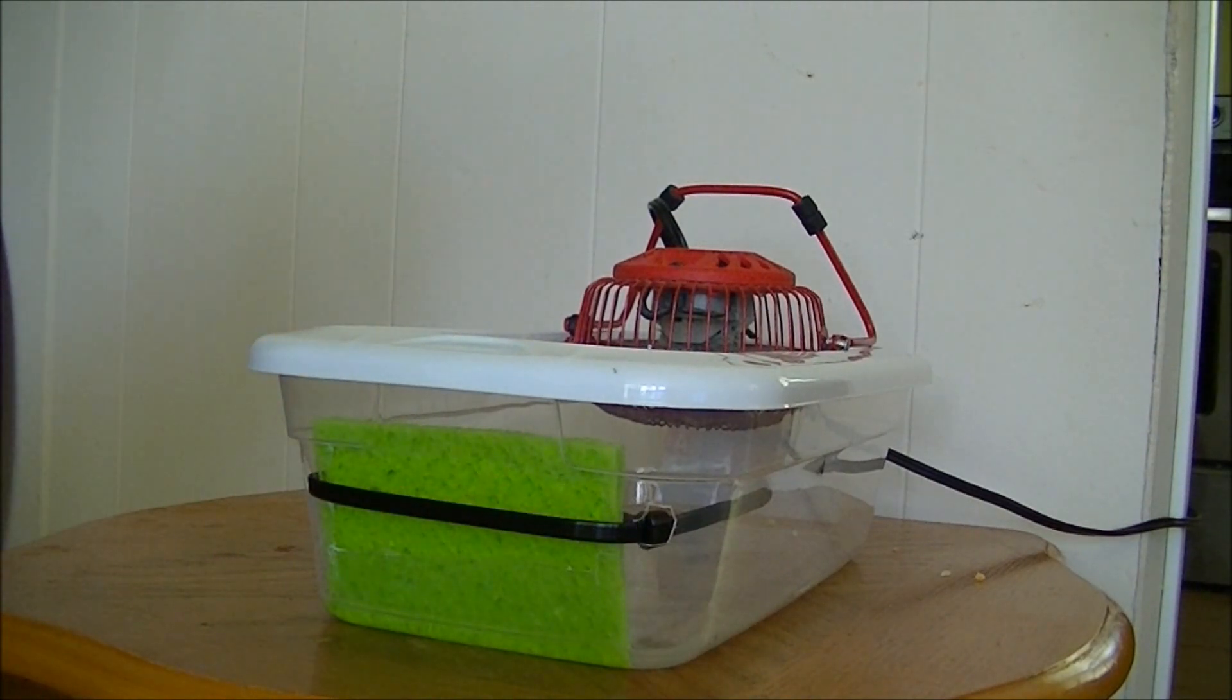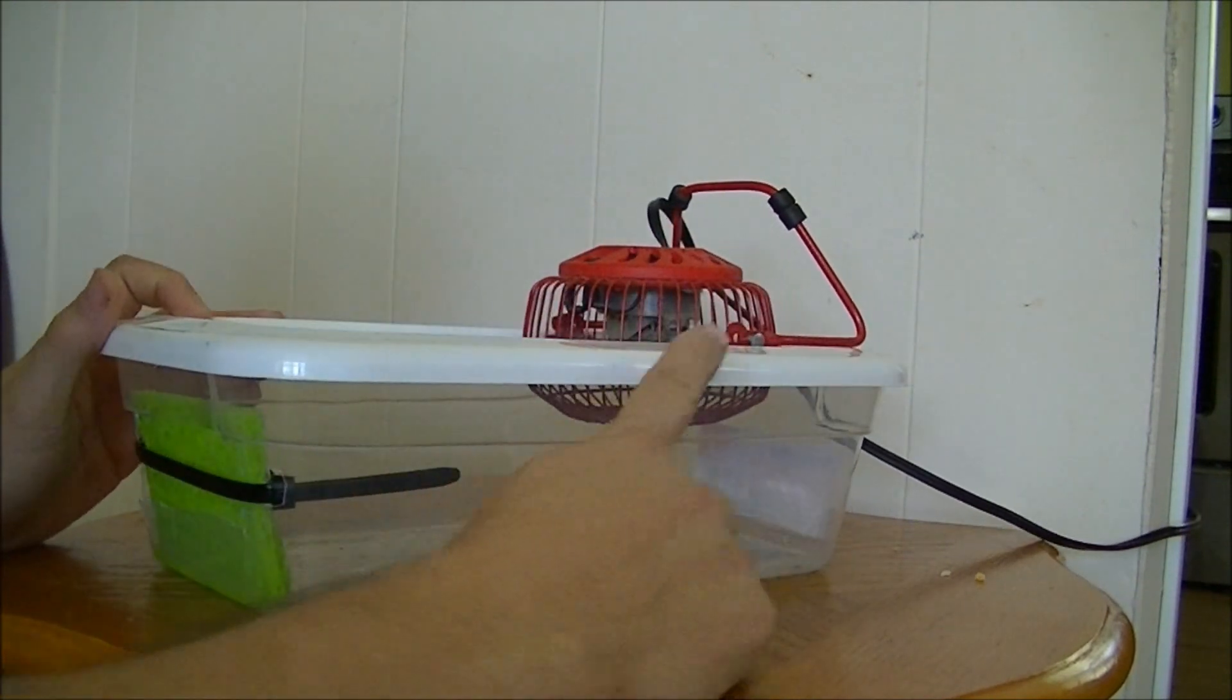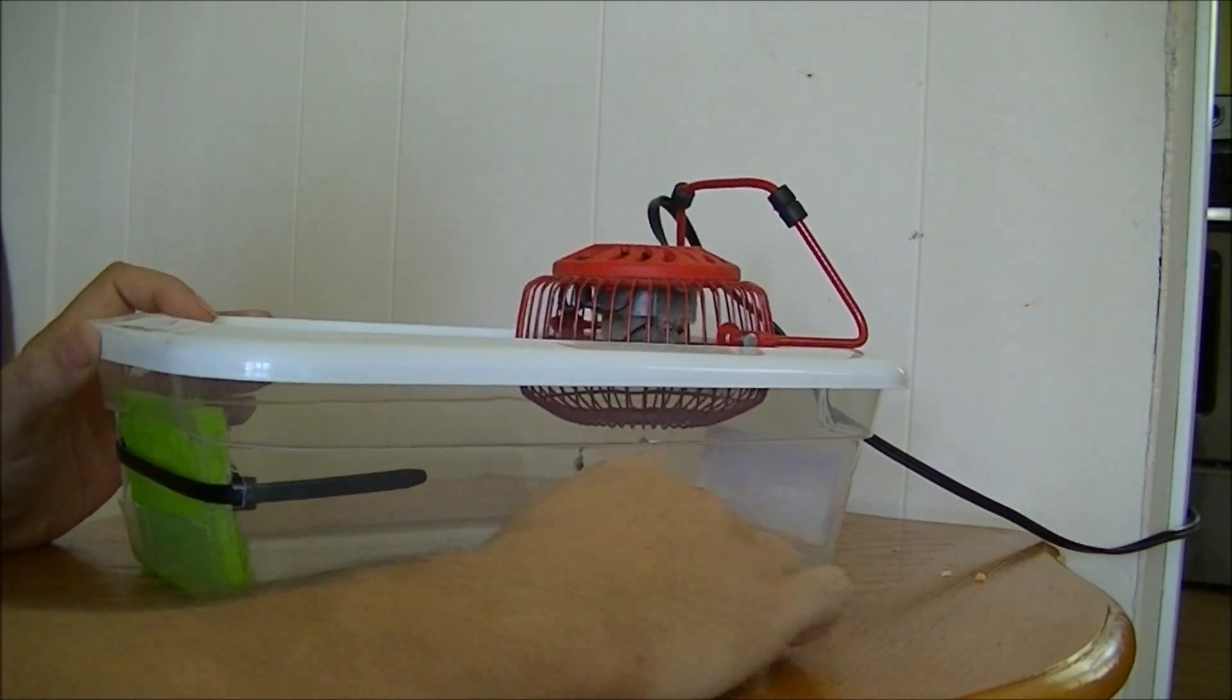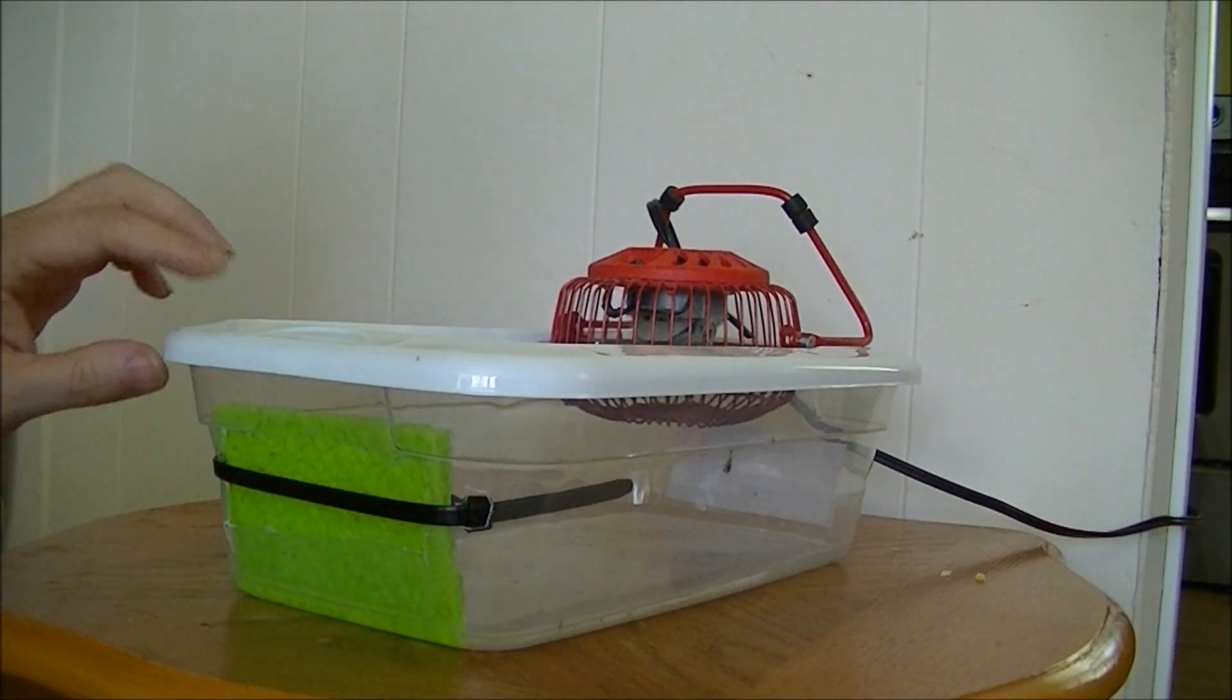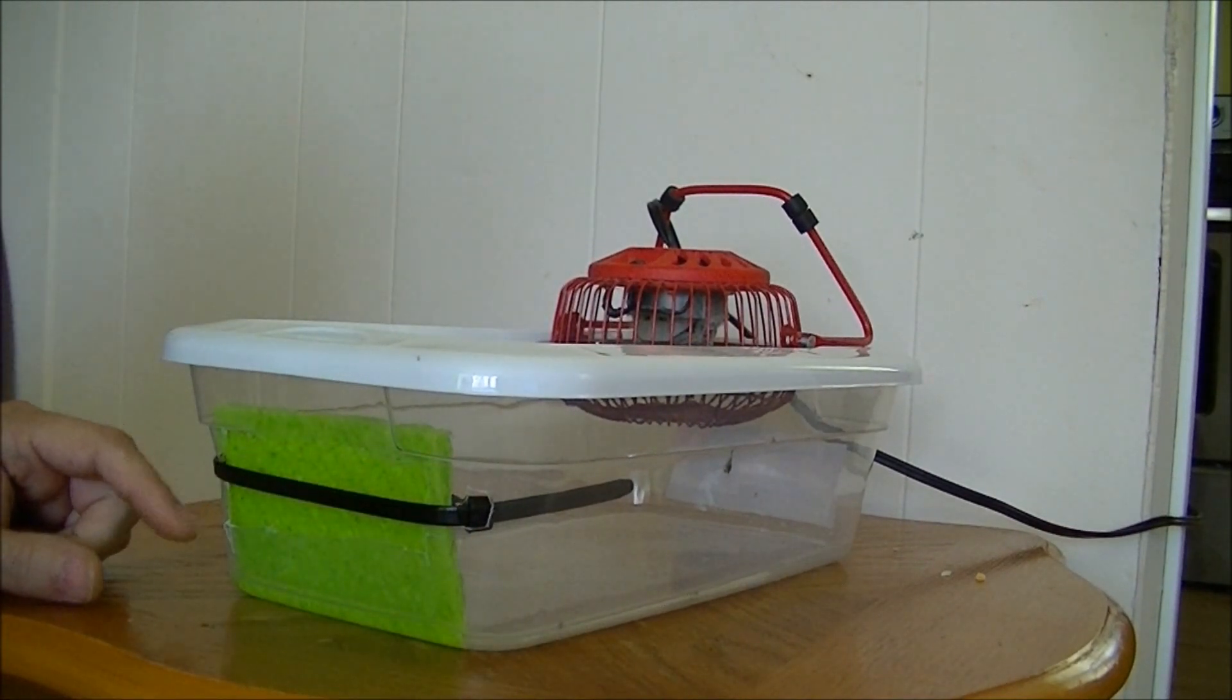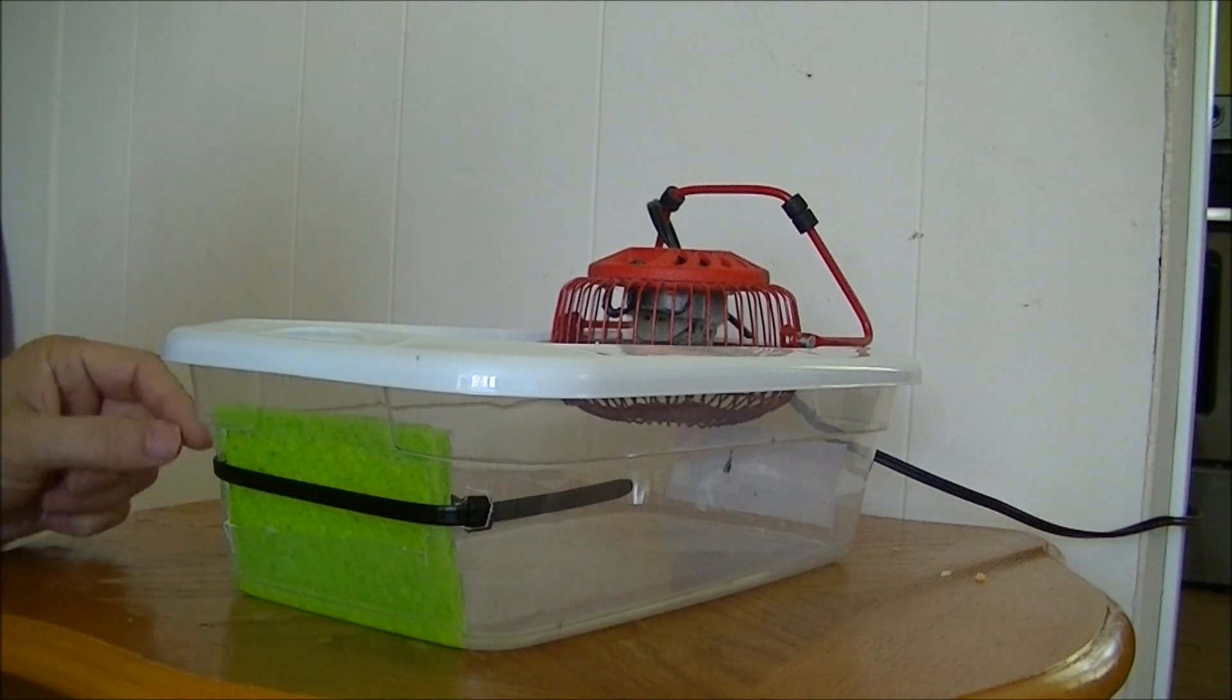So what happens is the fan will blow down across the water and come out the hole through the sponge. Now, you can use a filter and use a little tiny pump, like a little Zen pump, to pump the water across the filter.